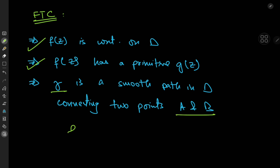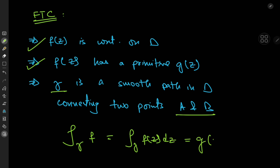Then the contour integral over gamma of the function f — which can be written as the integral over gamma of f(z) dz — equals the antiderivative g evaluated at b minus the antiderivative g evaluated at a.